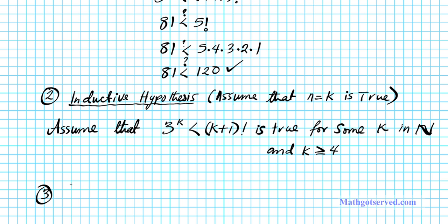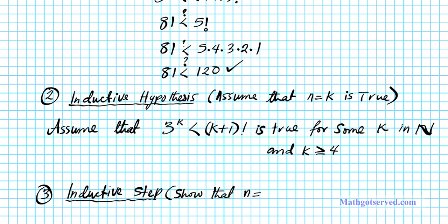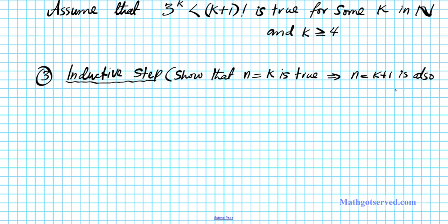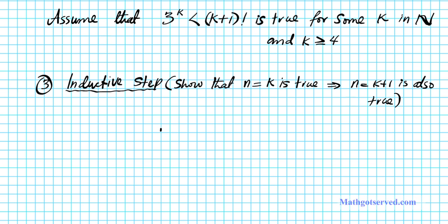Now what do we know about the next step — the inductive step? Can we use this assumption to show that the inductive step is also true? For the inductive step, we have to show that n equals k being true by assumption implies that the next step, n equals k plus 1, is also true. It's kind of like a domino effect — if one being true implies the next is true, then the statement holds for all integers satisfying the inequality. So we're going to start from the left side and advance it to 3 to the k plus 1.